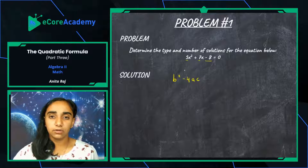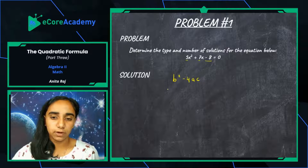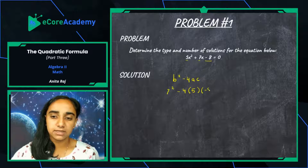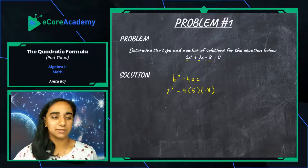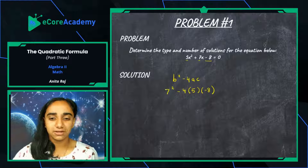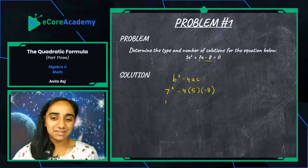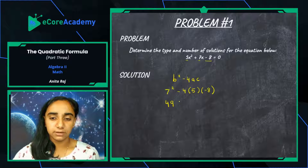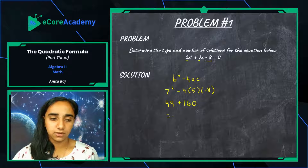Our b value is seven, so we have 7 squared minus 4 times our a value which is 5 times our c value which is negative 8. Remember to pay attention to the signs or you'll get the wrong answer. Seven squared is 49. Negative 4 times 5 is negative 20, and negative 20 times negative 8 equals positive 160 because negative times negative is positive. So we get 49 plus 160.